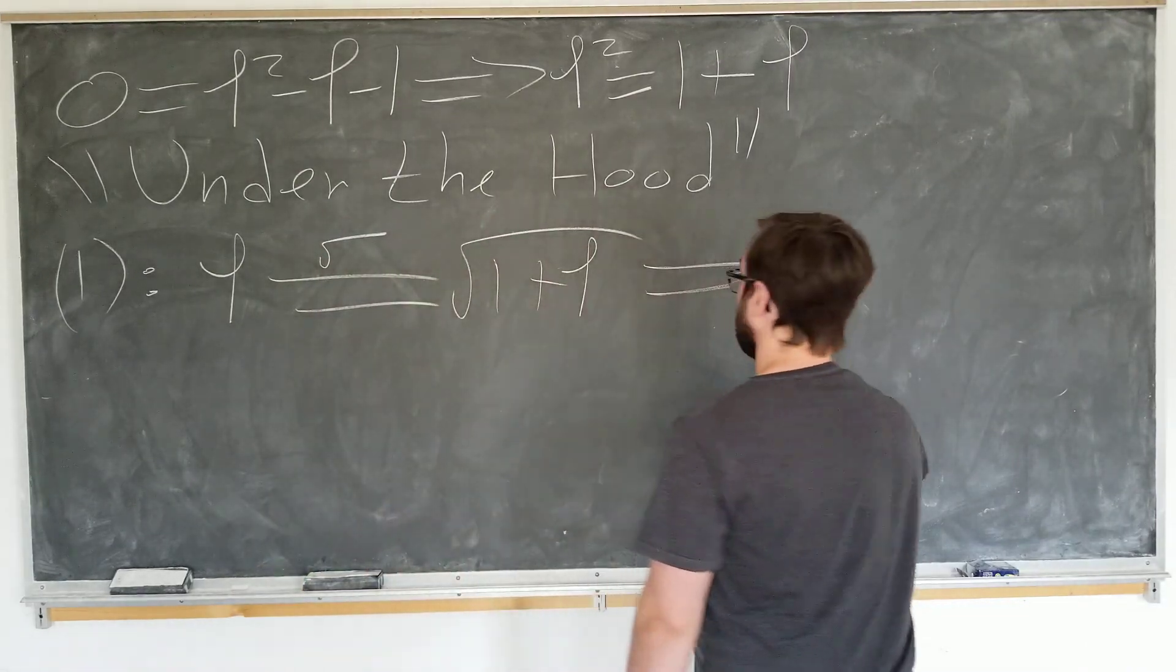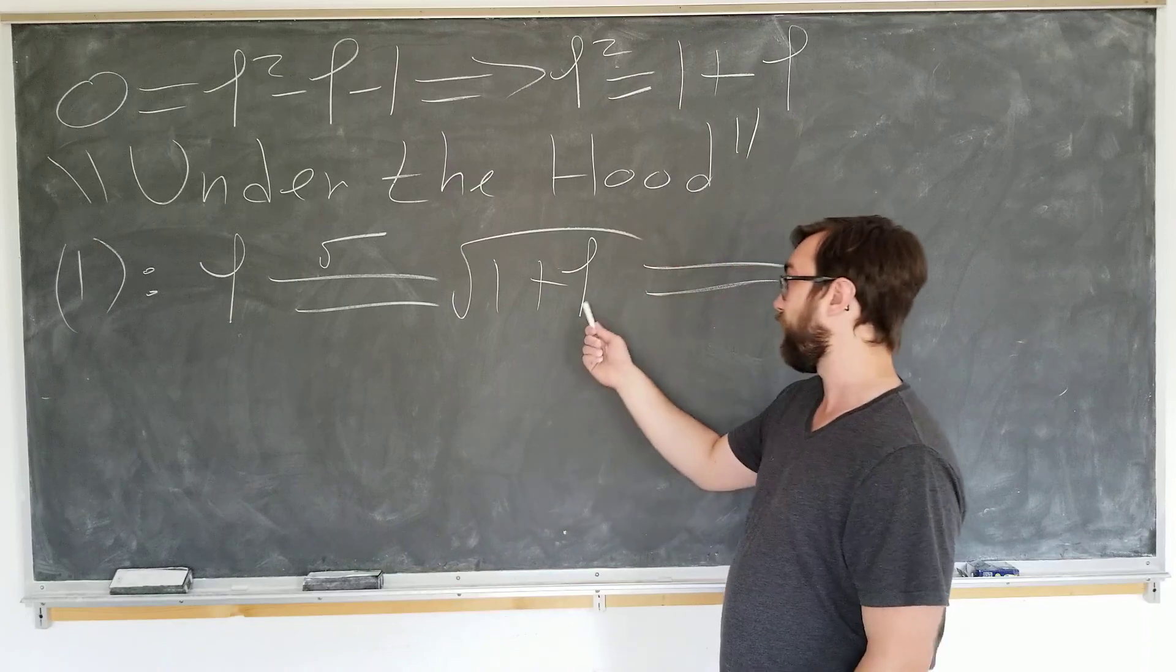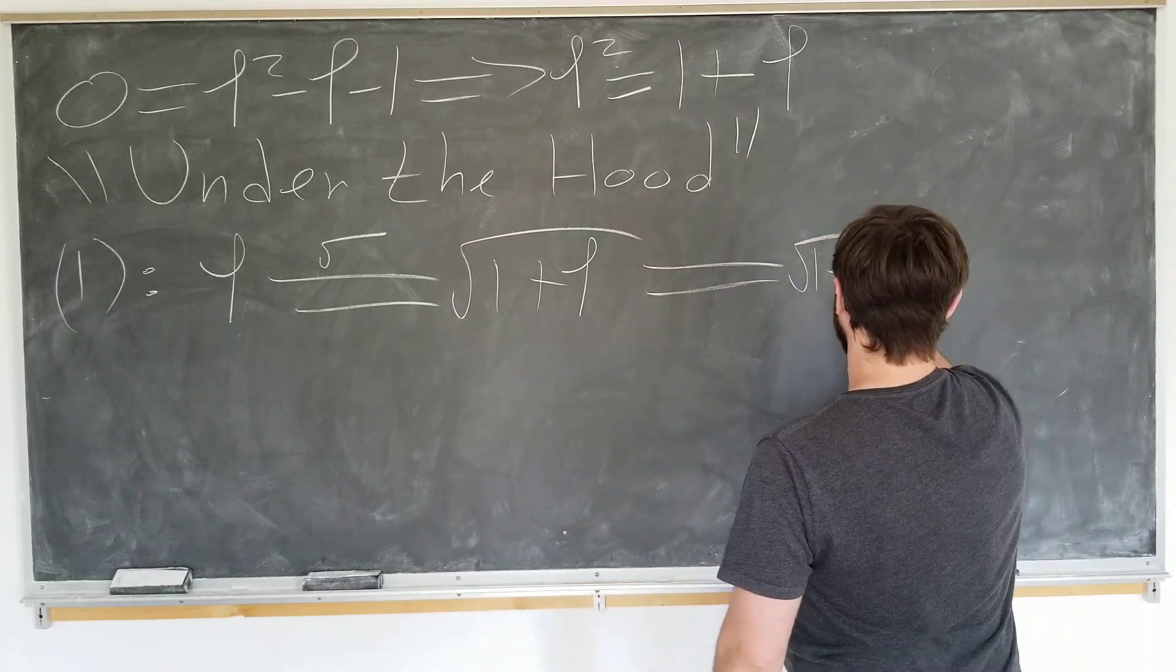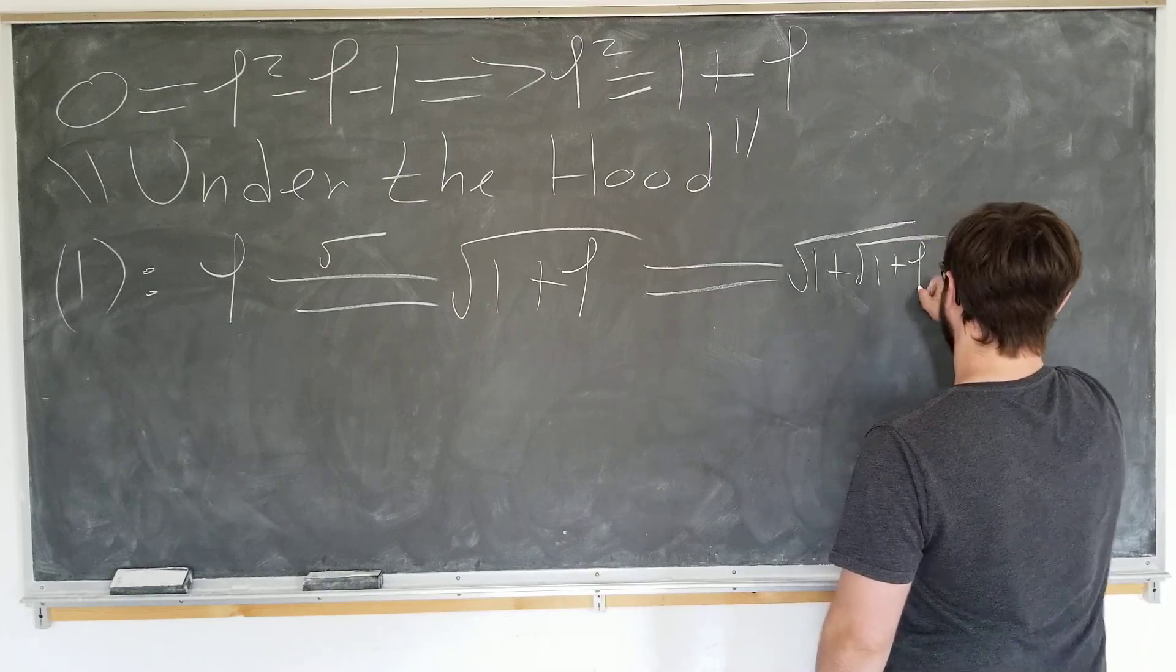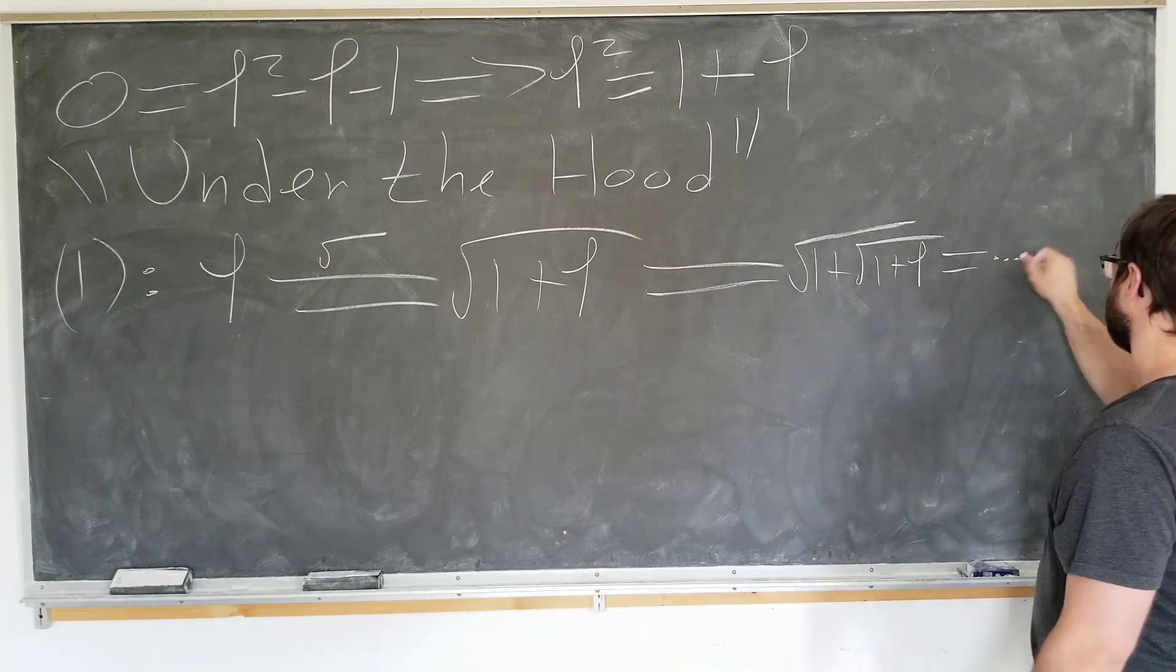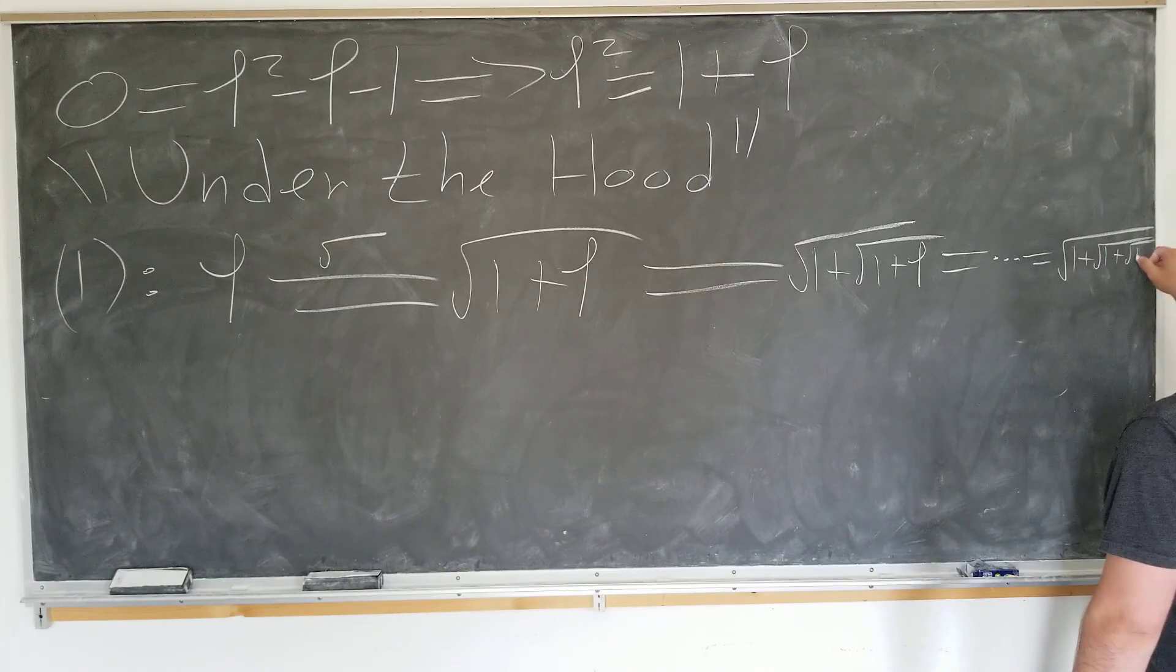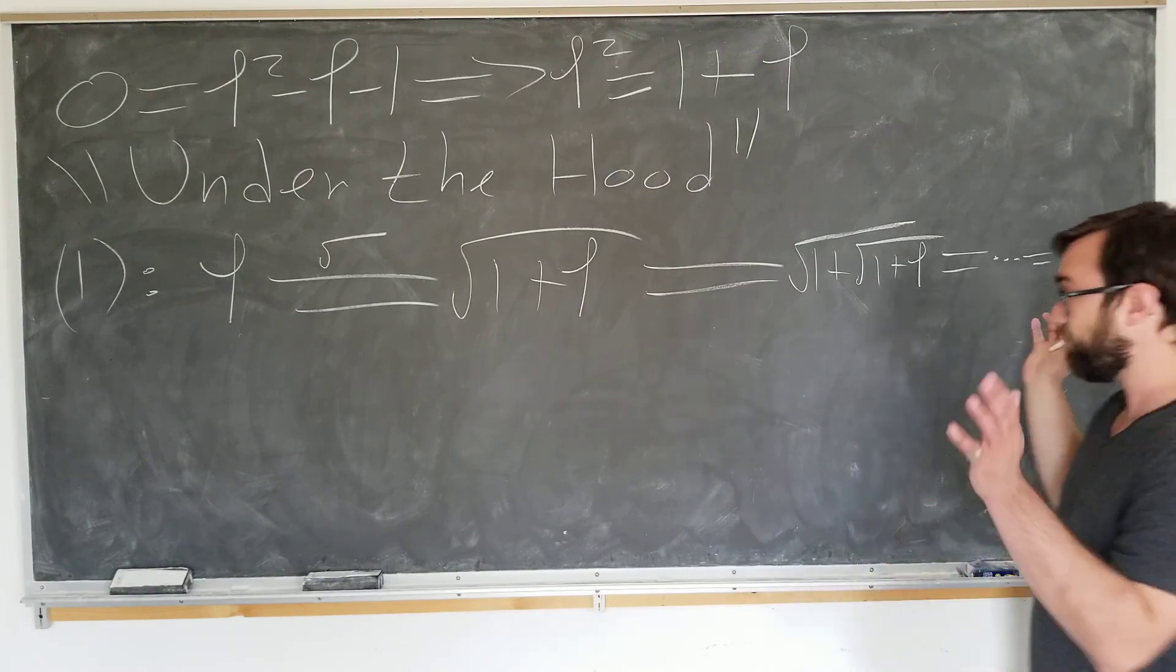But now, since we have phi here, we have phi here, we can go ahead and put it in again. Okay. The square root of 1 plus the square root of 1 plus phi. We can obviously continue this indefinitely. It could become the infinite nested expression that we saw in the first place. Excellent.